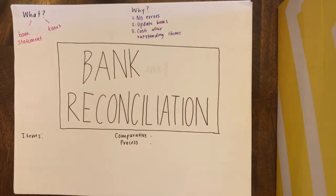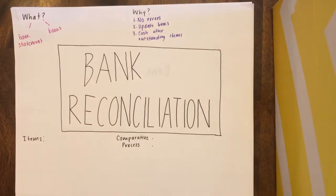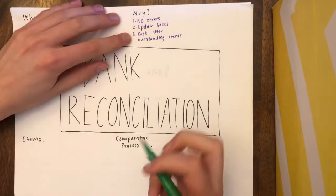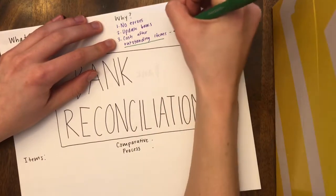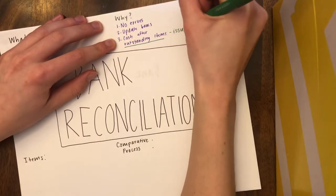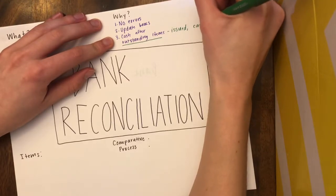What exactly are outstanding items? An outstanding check is one example of an outstanding item and it is a payment of a check that is recorded by the issuing entity but it hasn't cleared the bank account as a deduction from the cash balance, because checks must go through the mail. In more simplistic terms, an outstanding item has been issued but the cash has not been deducted.